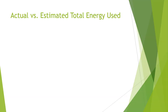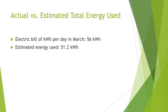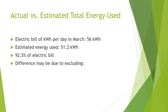To compare my actual and estimated total energy usage, I found my electric bill from March, which showed my energy usage was a total of 56 kWh. Based on the data collection of the eight devices, the estimated energy usage was 92.5% of my March electric bill. This seems higher than I expected and may be skewed due to recording my weekly log during an unnatural school week at home. The missing percentage of my bill may be due to excluding measurements of my refrigerator, microwave, and other lights, all of which are difficult to reach the outlet for, or have covers over the bulbs.